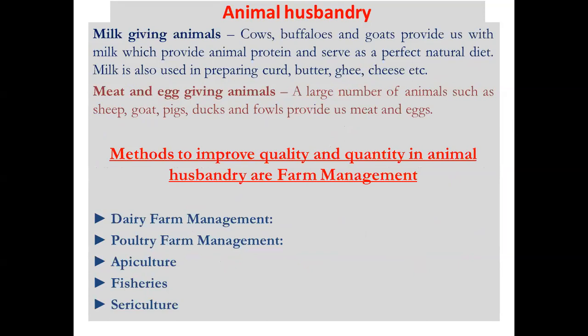Cows, buffaloes, and goats provide us with milk, which supplies animal protein and serves as a perfect natural diet. Milk is also used for preparing curd, butter, ghee, cheese, etc. Camels are also used for milk production in some regions. The second category is meat and egg: animals such as sheep, goats, pigs, ducks, and fowls provide us meat and eggs. Ducks and fowls are especially used for egg production.